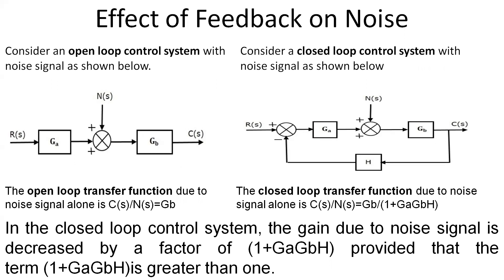For the effect of feedback on noise, we compare open-loop and closed-loop control systems. In the open-loop system, noise is added and R(s) with gain A is given to the error detector, then passed to gain B. There are two functional elements: gain A and gain B. The transfer function C(s) / N(s) equals GB, meaning C(s) = GB × N(s).